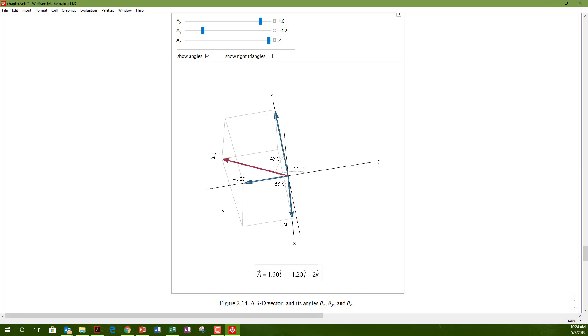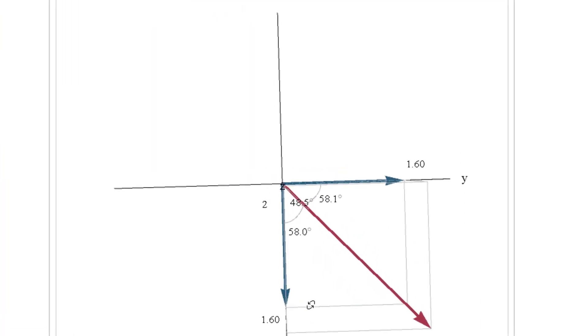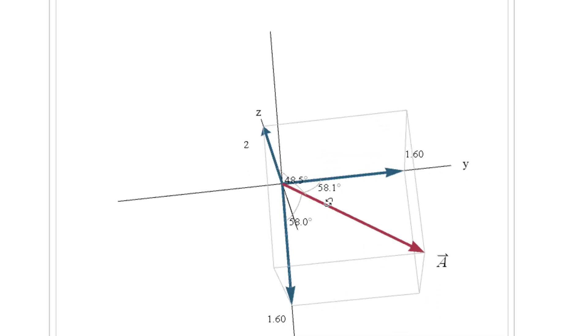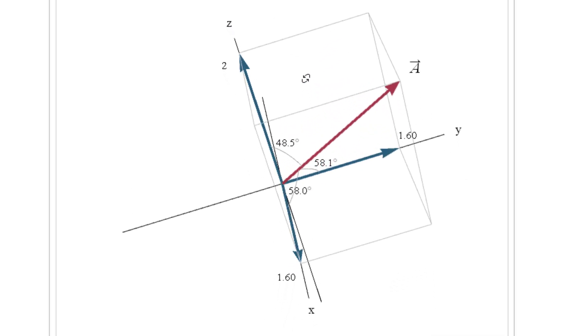Note the three angles, one from each axis, that define the direction of the vector. If I rotate the image so that I look directly down one of the axes, you can see two direction angles. But the vector appears to be in the plane of the screen, which you find is not the case when you continue to rotate the image.